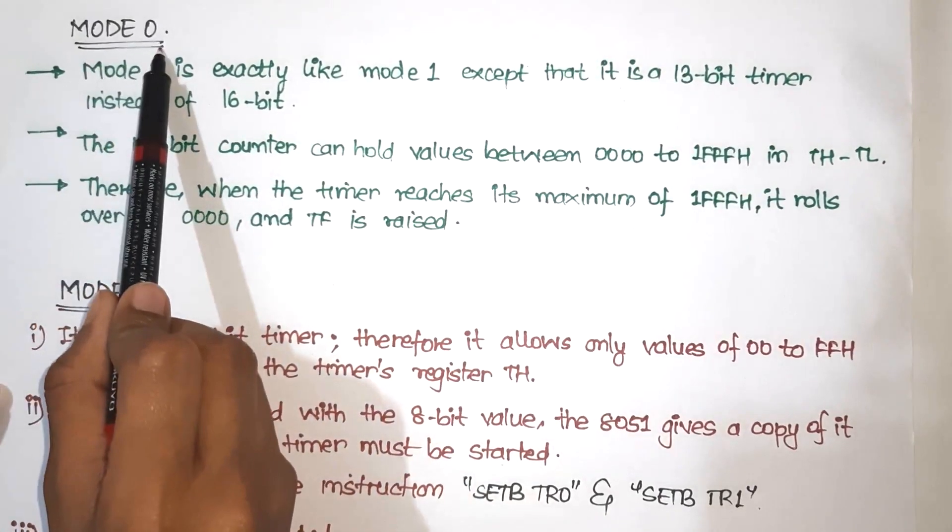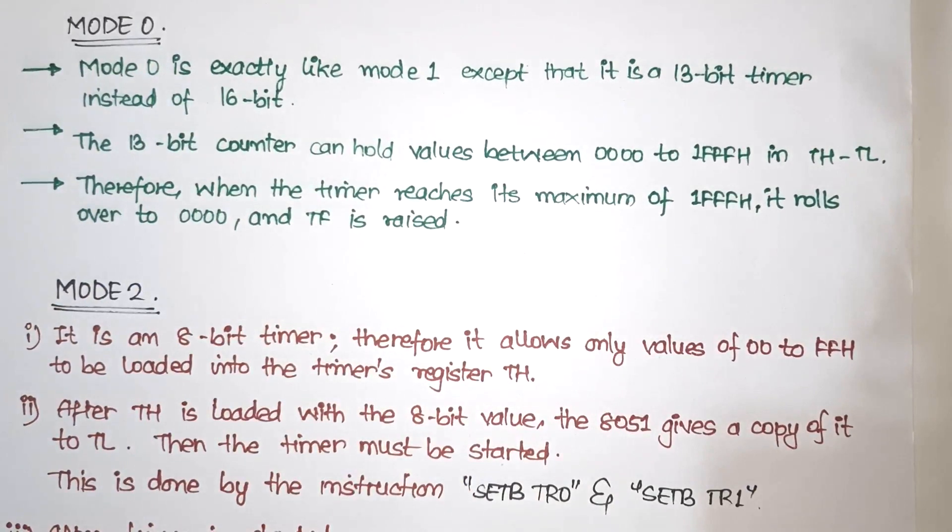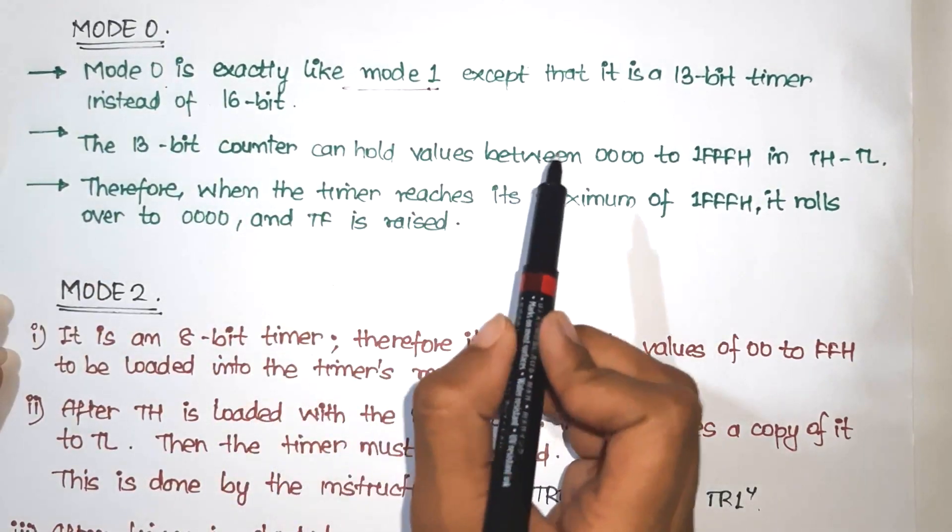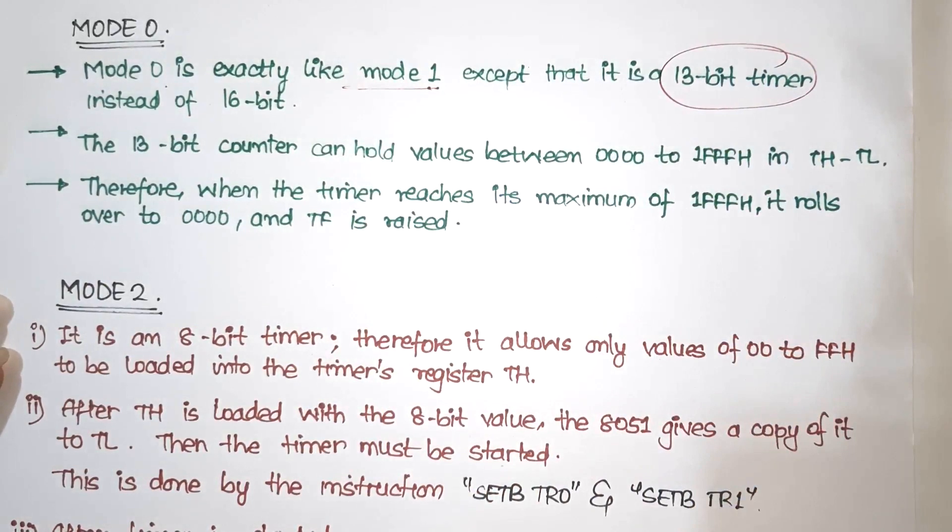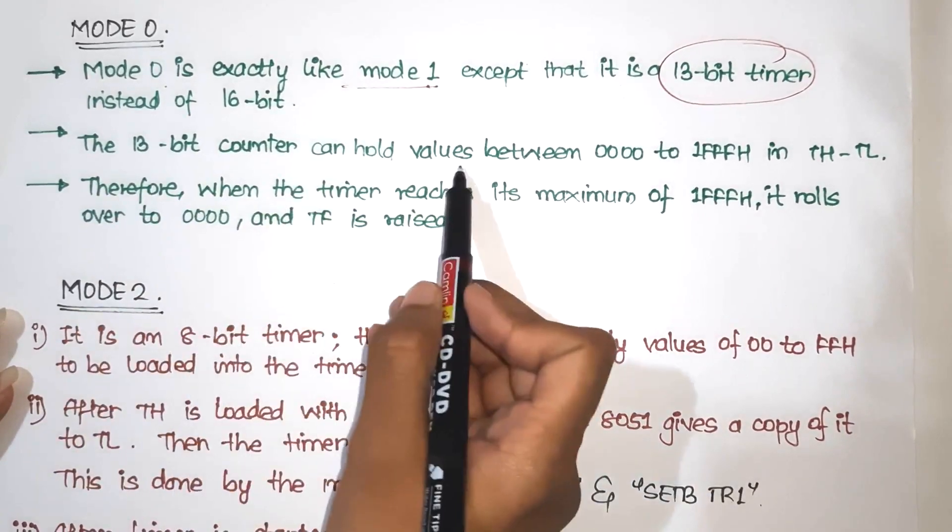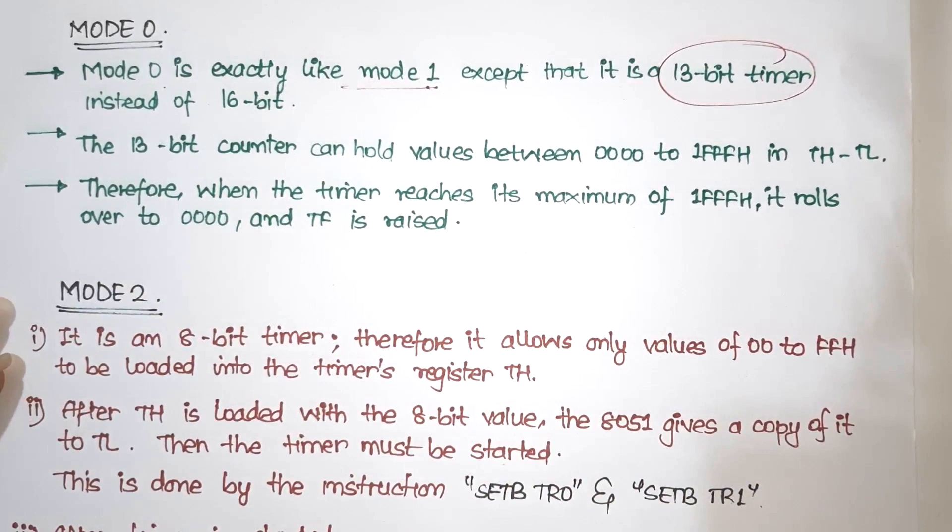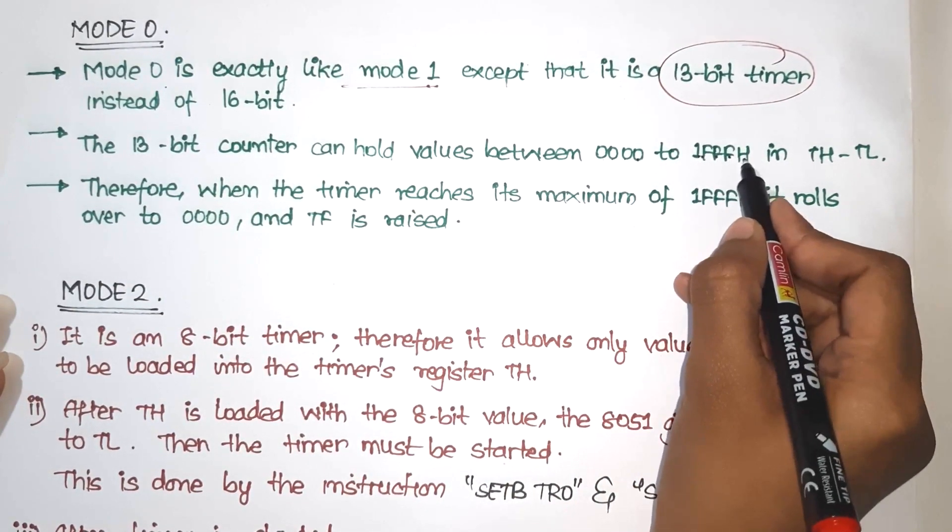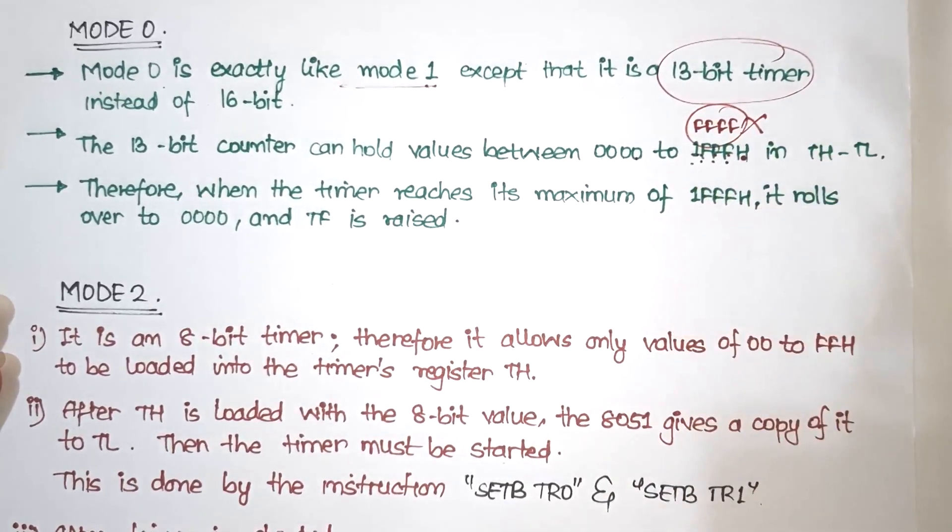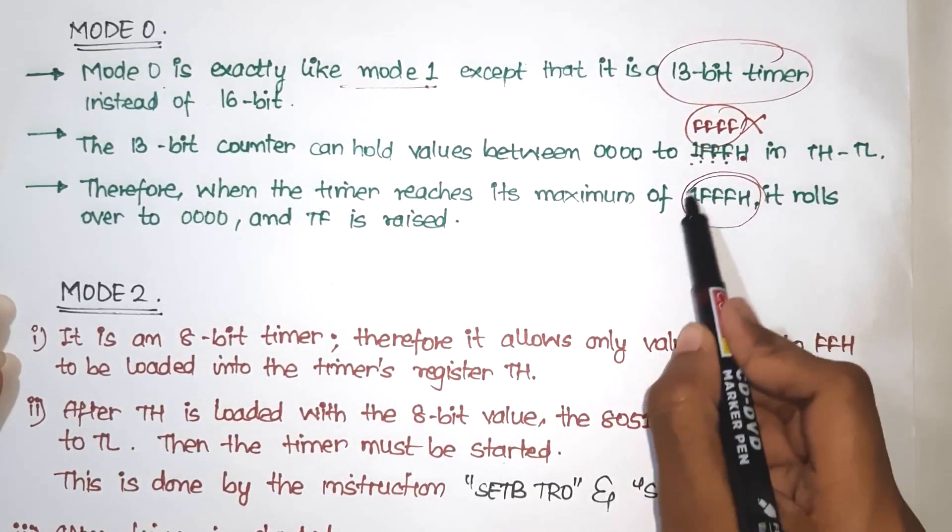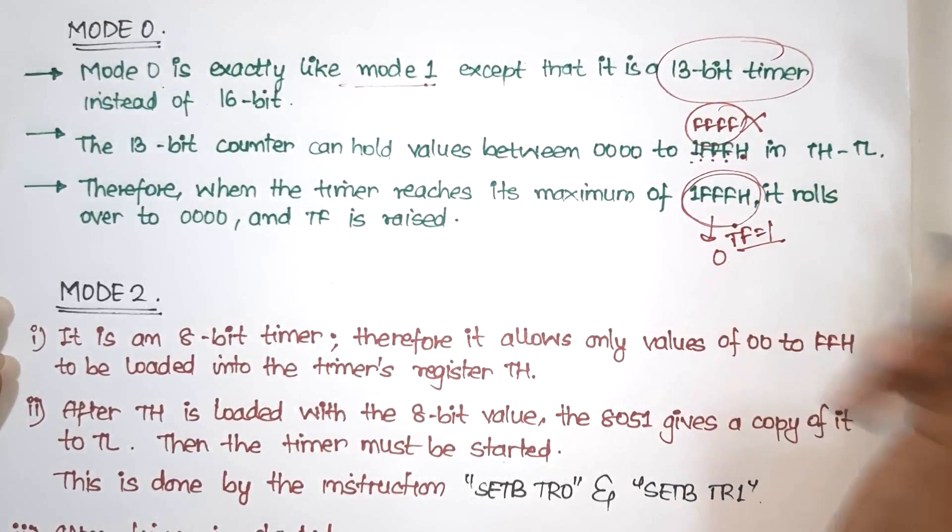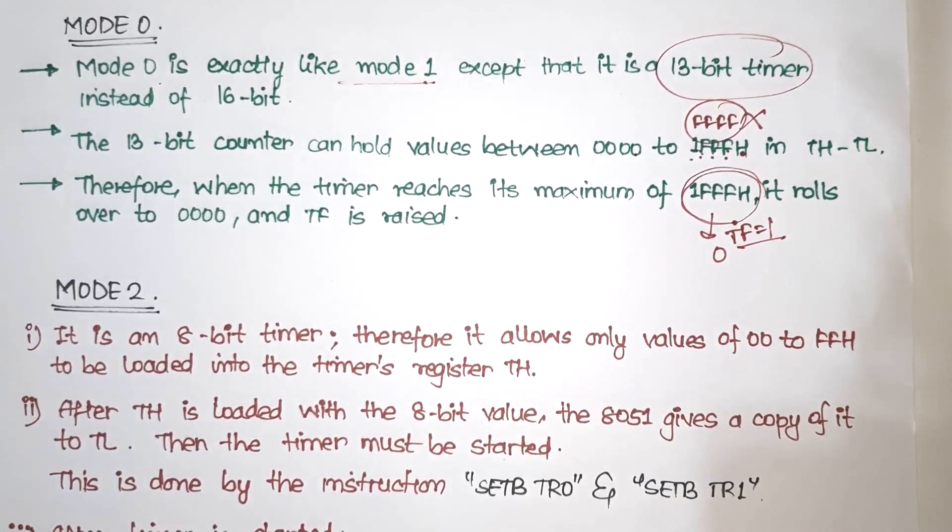Continuing to it, we have mode 0 as well. So since we have studied mode 1, mode 0 will be much easier to understand for us. It will be the same work as we had in mode 1, except the fact that this is now a 13-bit timer. In mode 1, we used a 16-bit timer, but here it is just 13-bit. So the 13-bit counter can hold values from 0000 to 1FFF hexadecimal. So this is the only difference between mode 1 and mode 0.